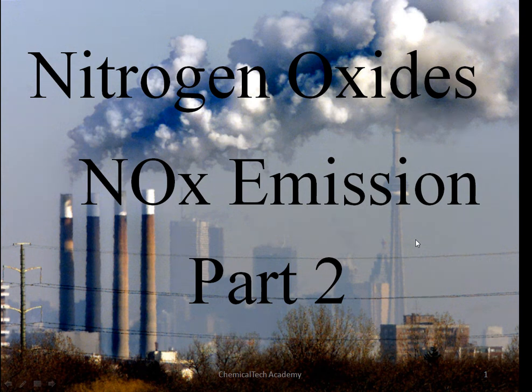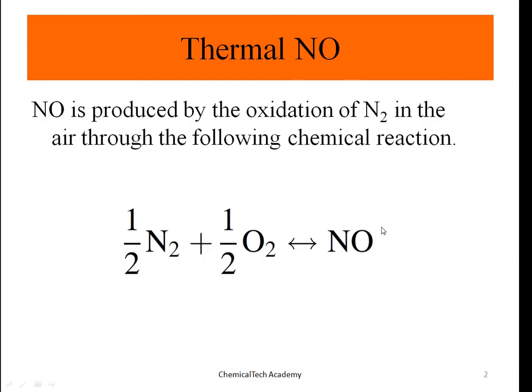This is the second part of nitrogen oxides or NOx emissions. These are all part of the air pollution course. In part one we covered what nitrogen oxides are — what NO and NO₂ are. Now let's see how NO, nitric oxide, is produced.